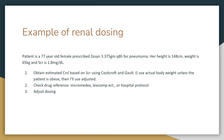Let's get into some examples — that way I can explain more as we go of how to actually renal dose patients. This patient is a 77-year-old female prescribed Zosyn 3.375 Q8 for pneumonia. Her height is 148 centimeters, weight is 65 kilograms, and serum creatinine of 1.8. So the first thing we'll do is obtain an estimated creatinine clearance based on serum creatinine using the Cockcroft-Gault equation.